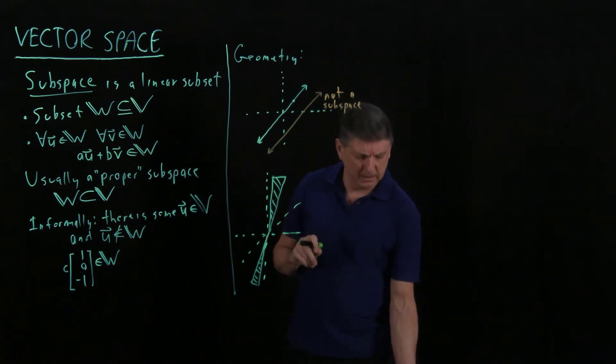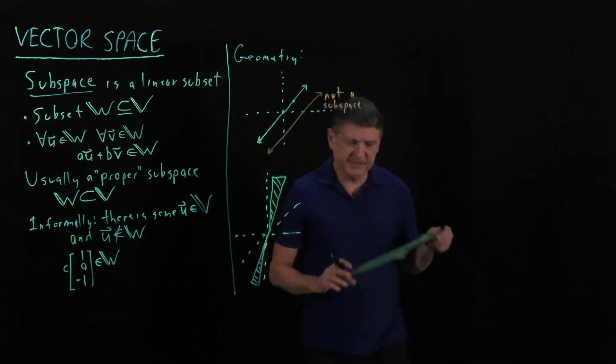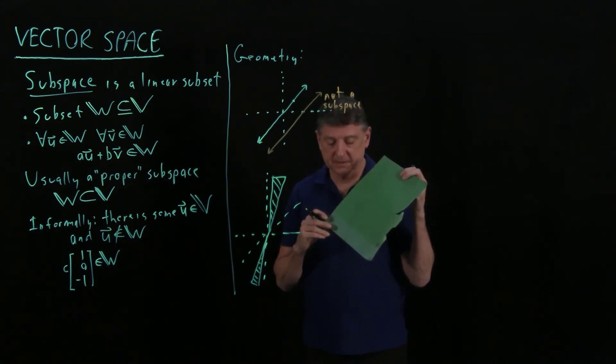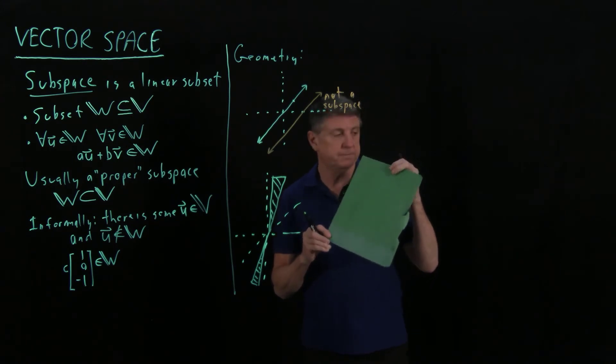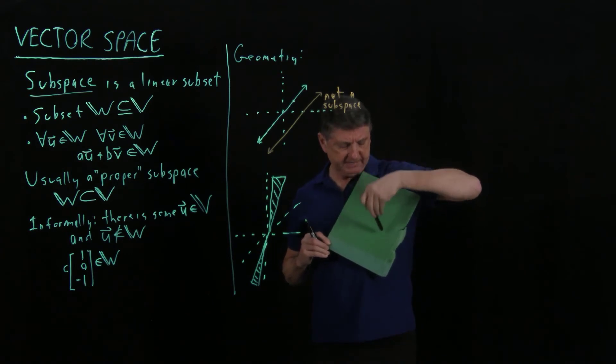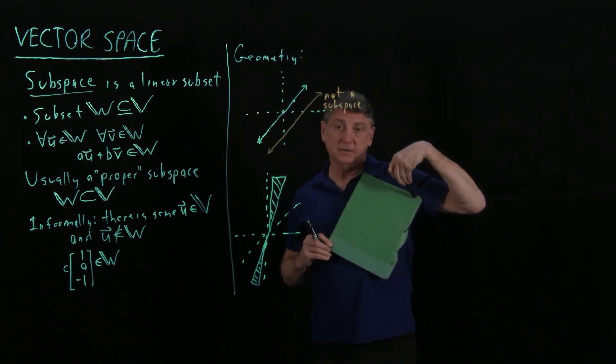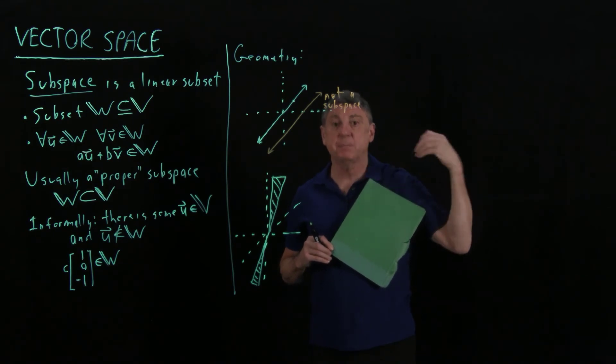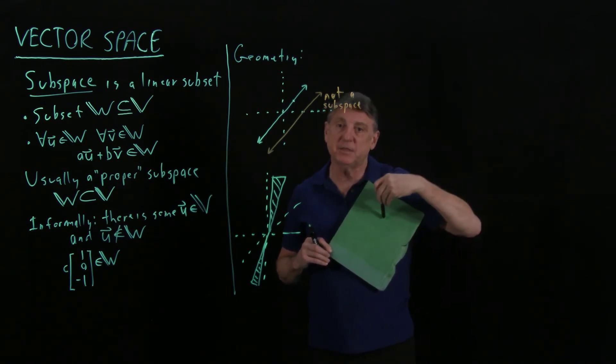How does that work? Well, let's suppose that this folder represents the vector subspace. If I take, and let's suppose that this corner is the origin, if I take any vector here, and any vector here, and I add them, I'll get a new vector, and that vector has to lie on this folder. It can't jump off, and it can't pop backwards. It has to be on that folder.